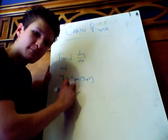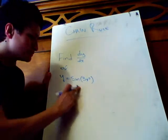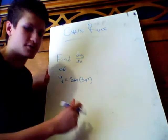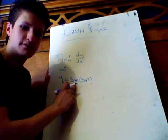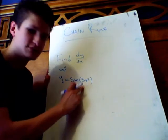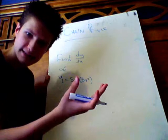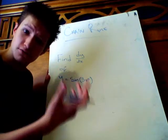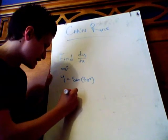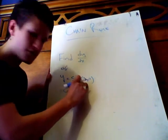So, f prime of g of x, let's use a different approach. What's the derivative of sine of x? Let's say that this stuff inside these brackets was just a regular x. We know that. That's cosine of x. So, we'll say cosine of something.